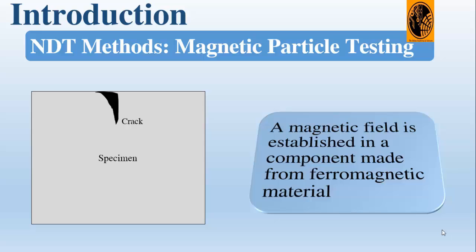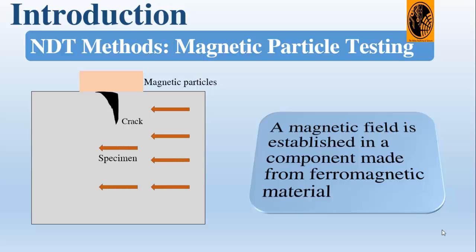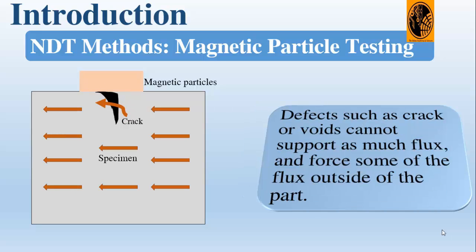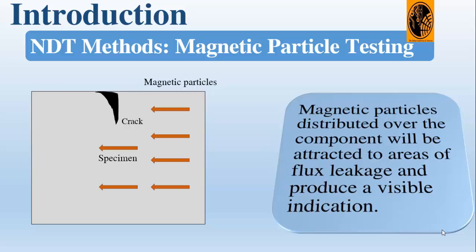Let's see another technique: magnetic particle testing. A magnetic field is established in the component, which of course should be made from ferromagnetic material. The arrows here represent the magnetic field lines. The magnetic lines of force travel through the material and exit and re-enter from the poles. A defect cannot support the flux and forces some of the flux outside of the part.